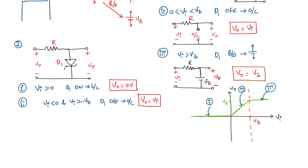In the third case, VI is less than minus Vz, meaning we are entering the region where the zener diode is in breakdown. D1 will be in the breakdown region and will act as a voltage reference, so the output voltage will be equal to minus Vz.